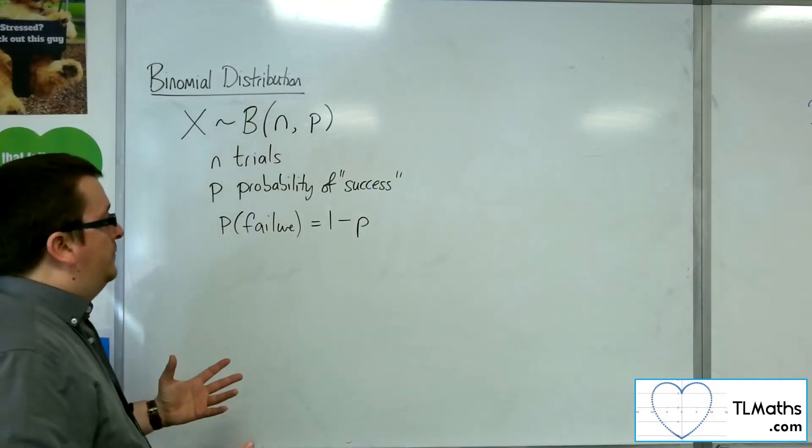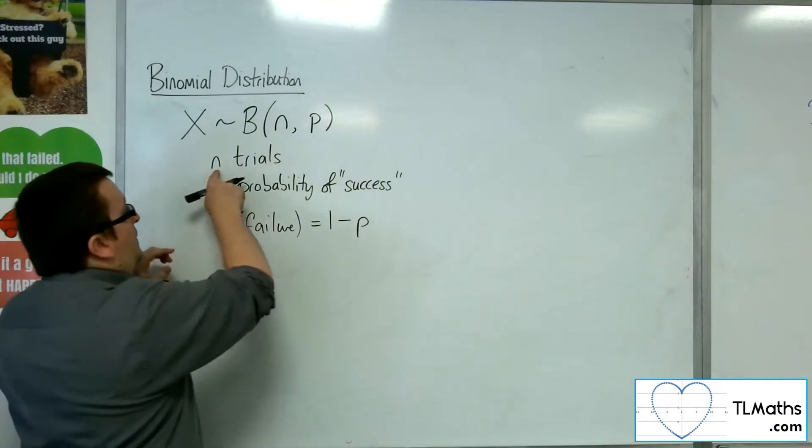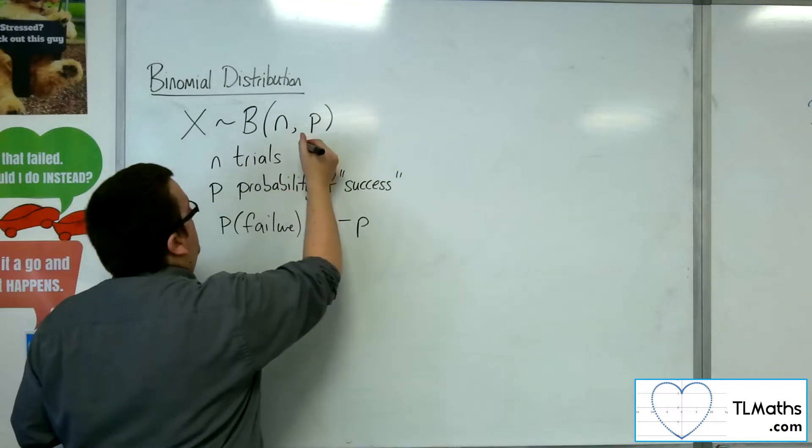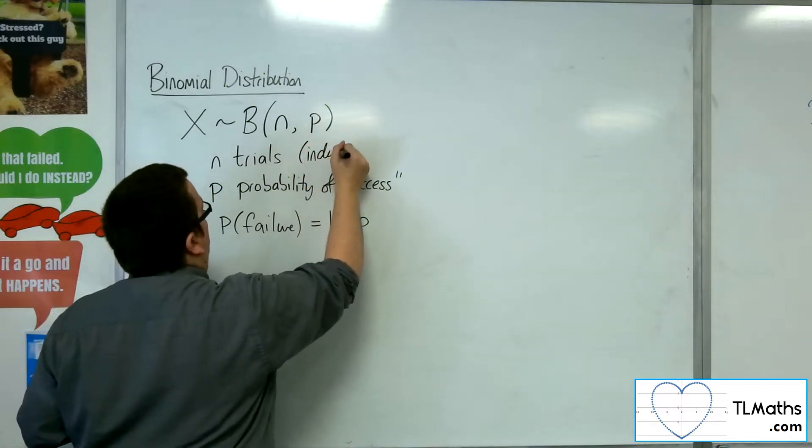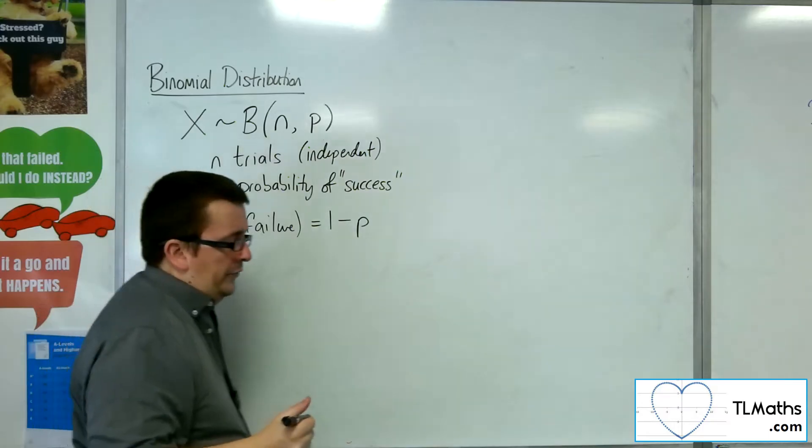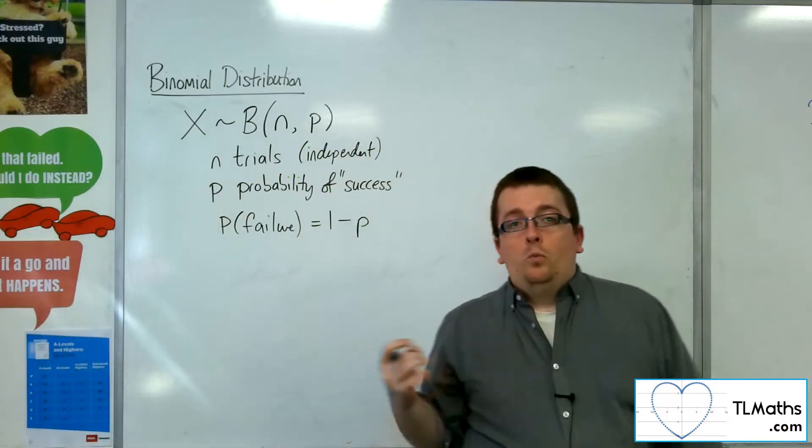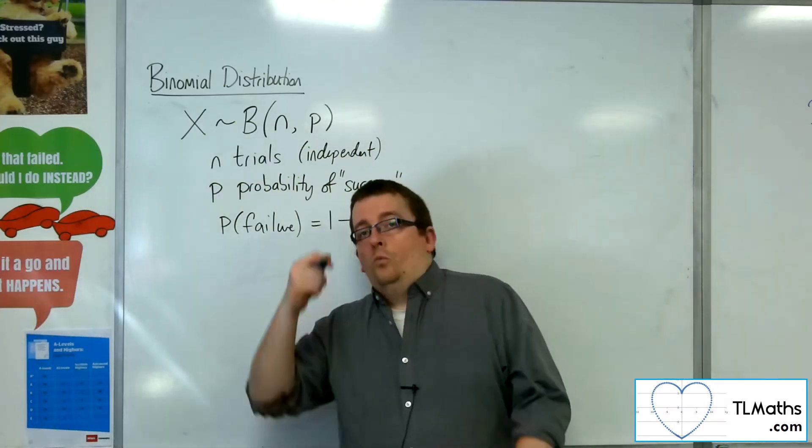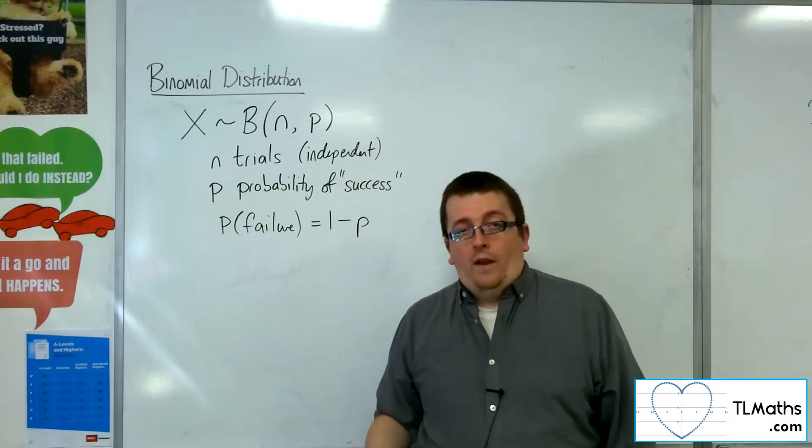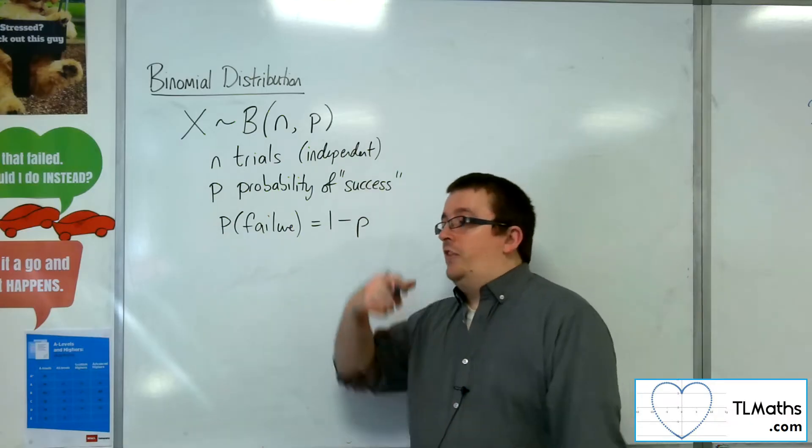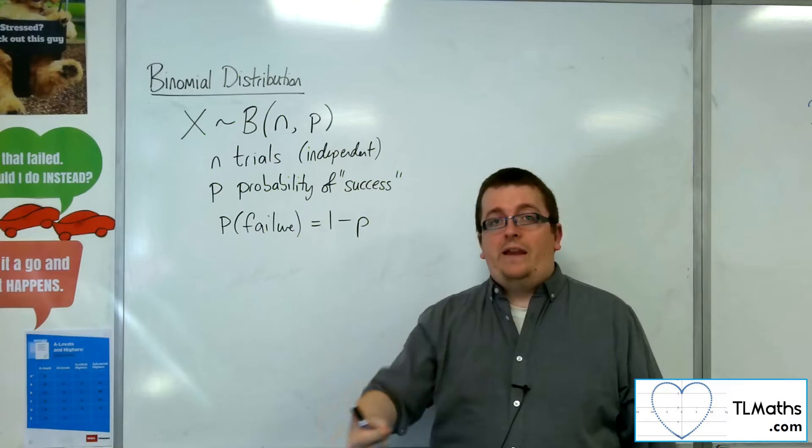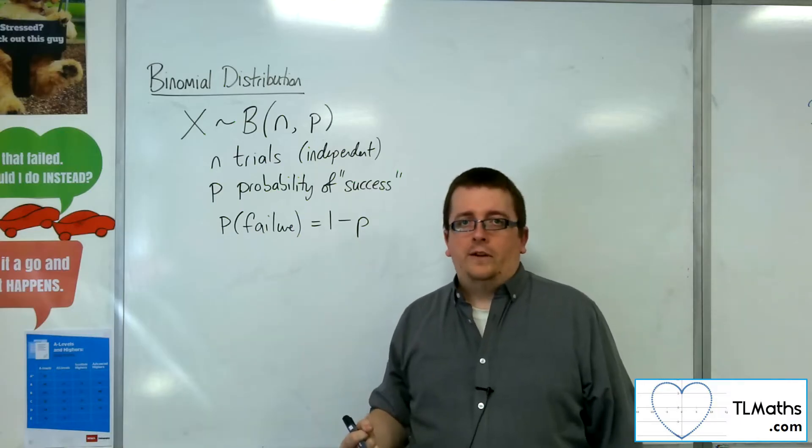One takeaway, the probability of success. Now, each of the n trials must be independent of one another. So once you've done one trial, when you're going to do the next one, the next one has got to have completely the same set of conditions as the first one.